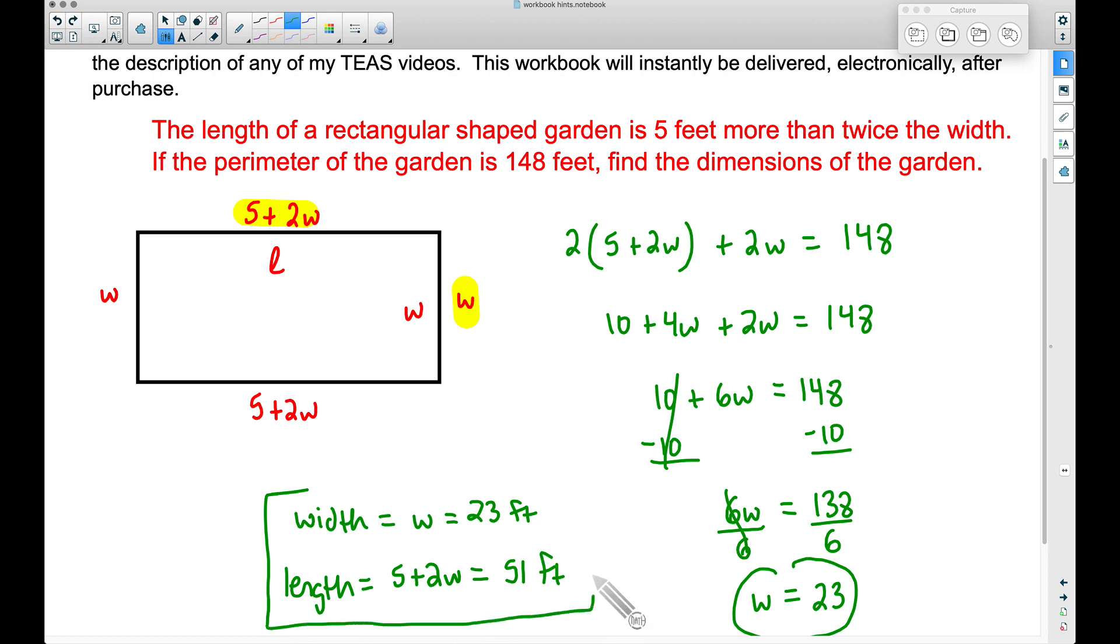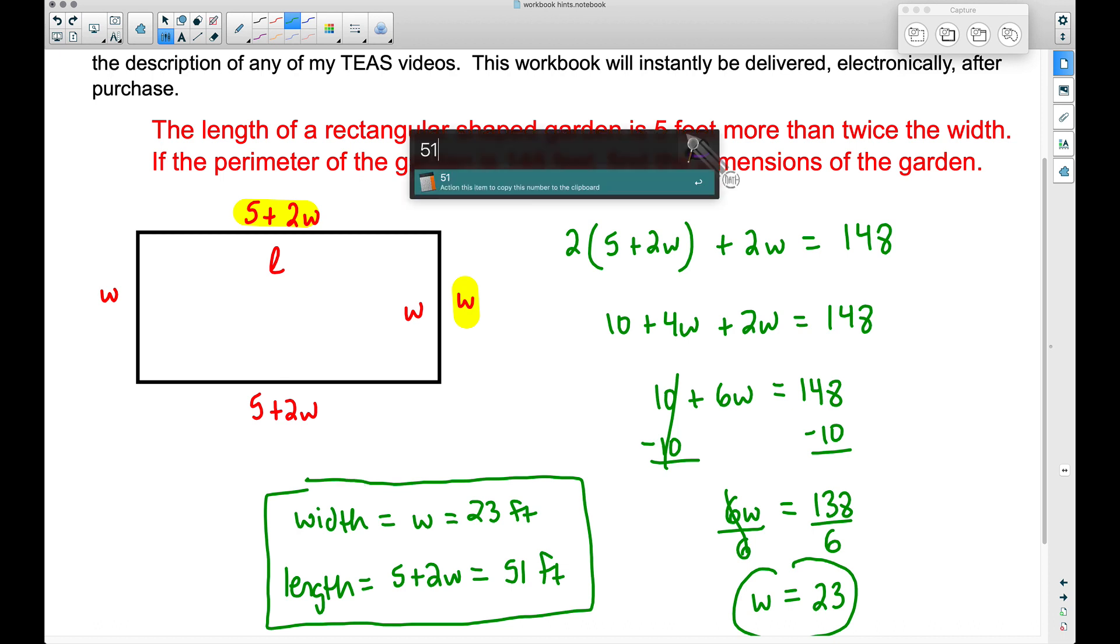These are the dimensions: 23 feet by 51 feet. We can quickly check this. If I take 51 plus 21 plus 23 plus 51 plus another 23, I'm adding up all four sides of that rectangle. I'm adding up the 51 twice and the 23 twice. Notice when we do that, we do get 148 for our perimeter.